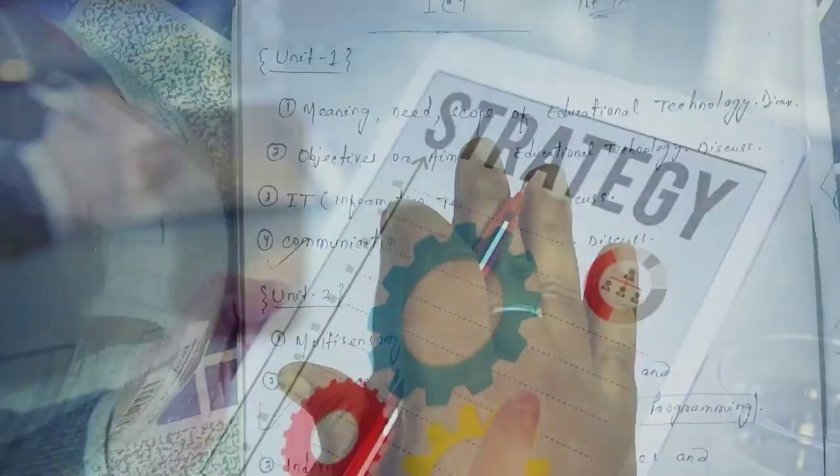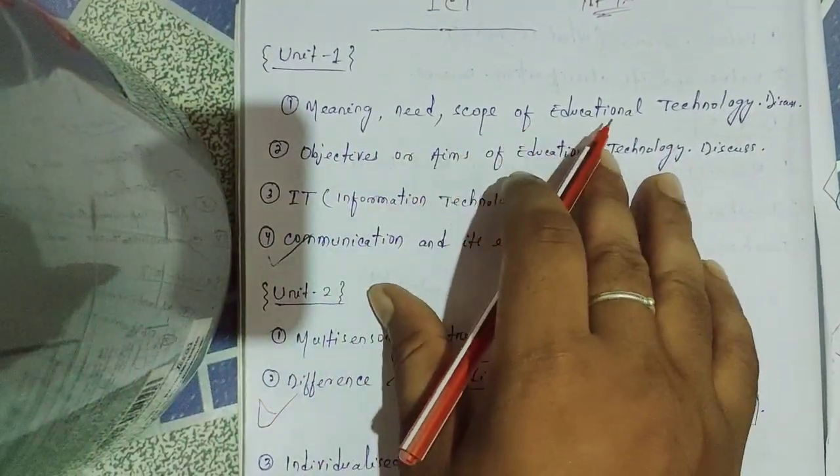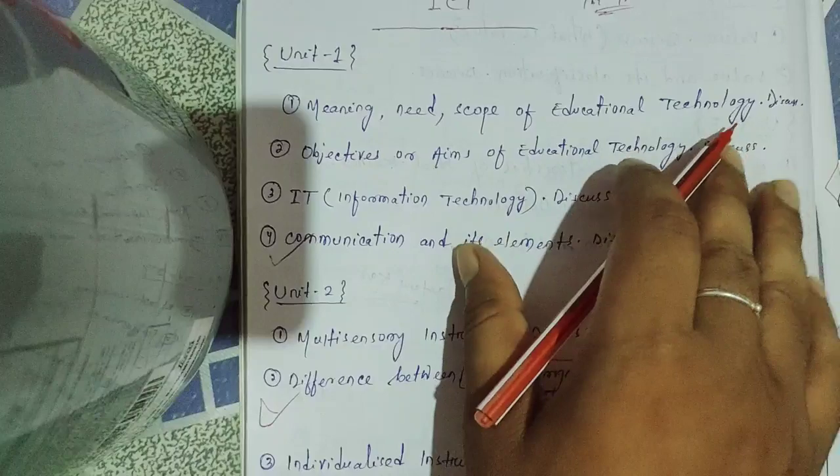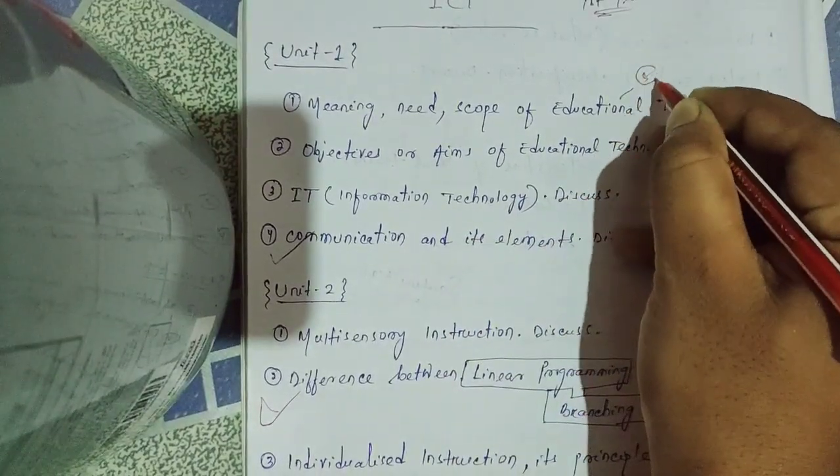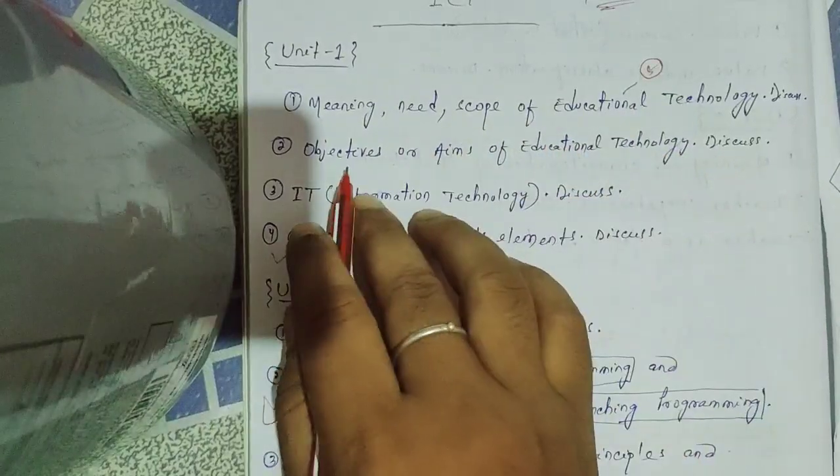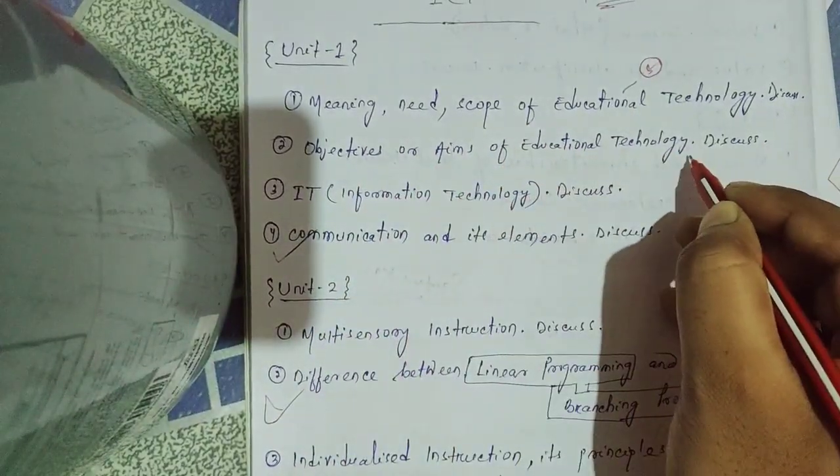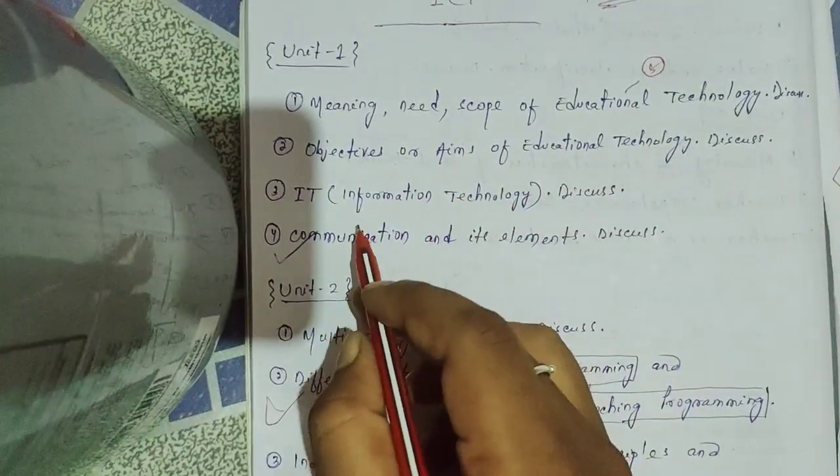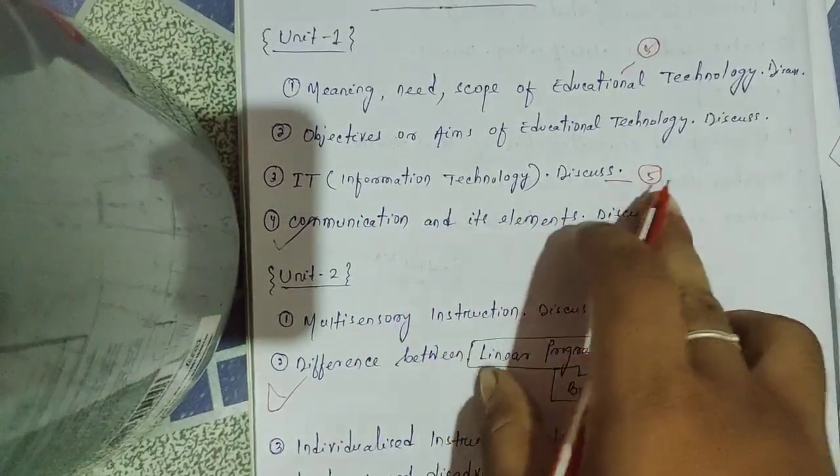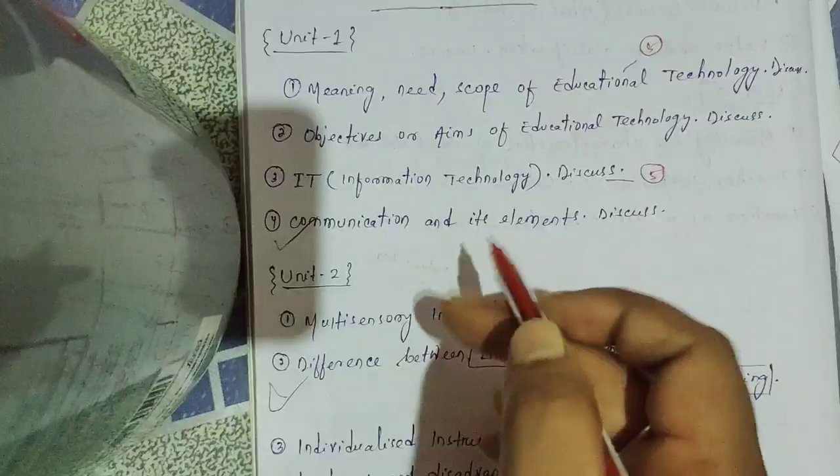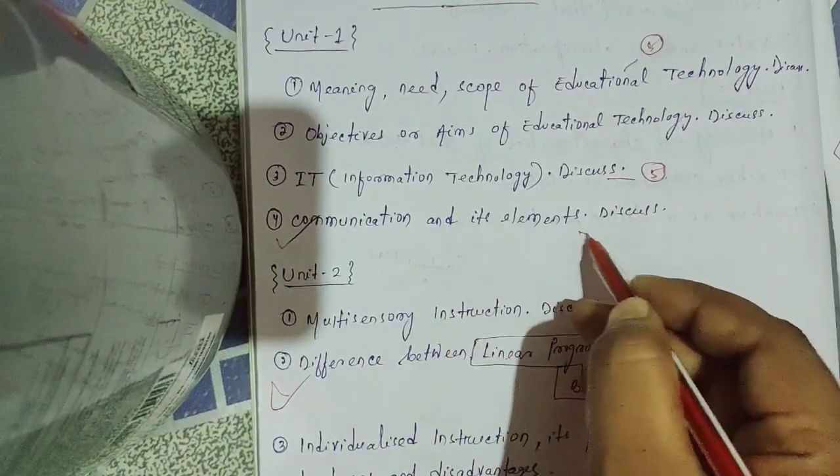First, Unit 1: Meaning, need, and scope of educational technology. It's an important question, either sort or short mode of five marks. Objectives or aims of educational technology is an important question. Information technology and communication and its elements are long questions.